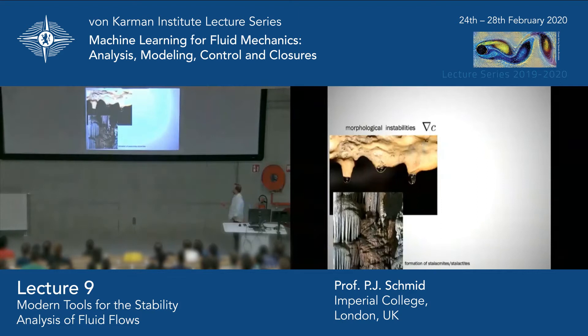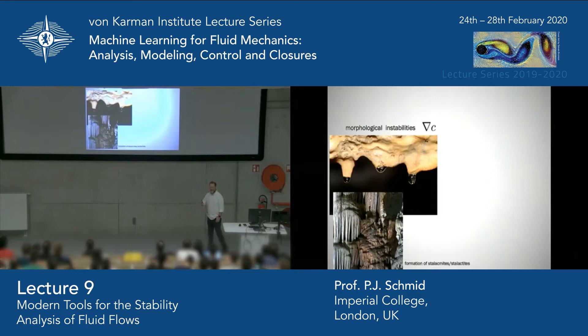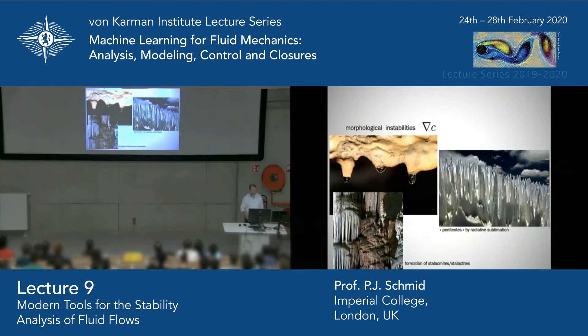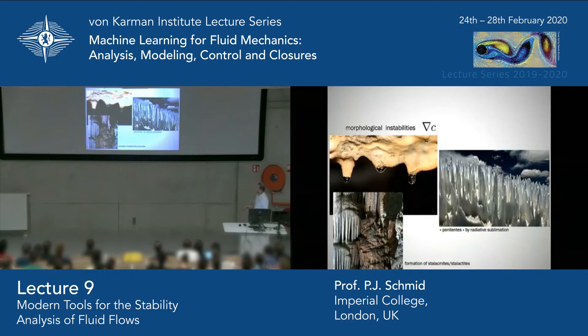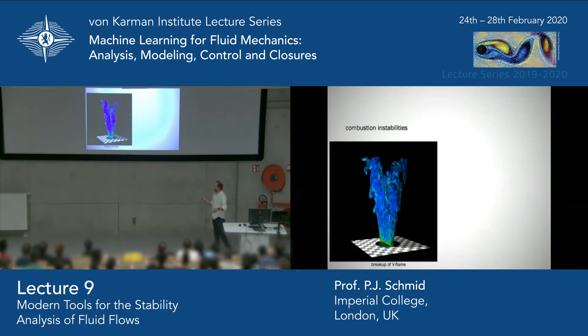The red spot on Jupiter is a rotational instability. Morphological instabilities — if you have a gradient in chemical concentration, for example calcium, you get formation of stalagmites and stalactites in caves: a very slow but real morphological instability. Similarly, penitentes — ice sculptures about two meters high in the Andes — result from a radiative sublimation instability that sets the spatial scales. Finally, combustion instabilities involve reactive flow with all kinds of instabilities.